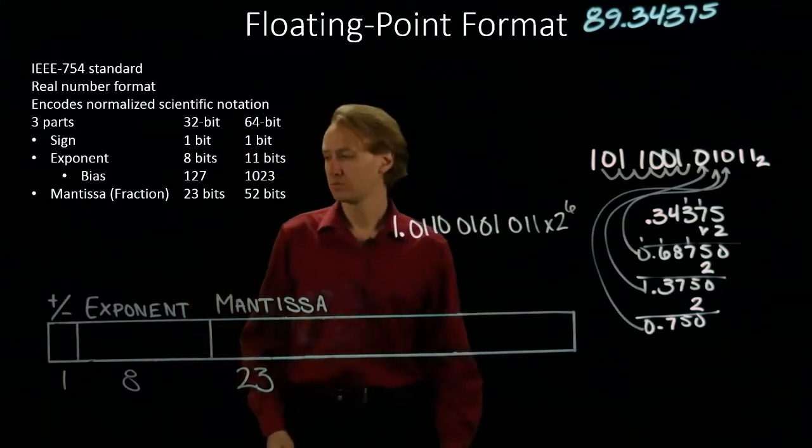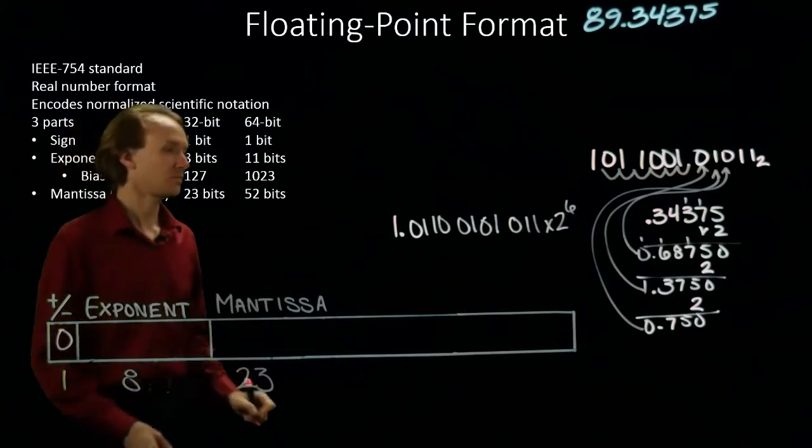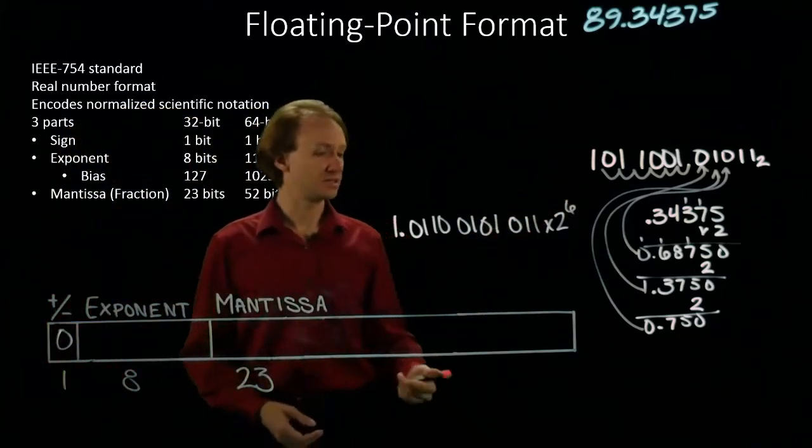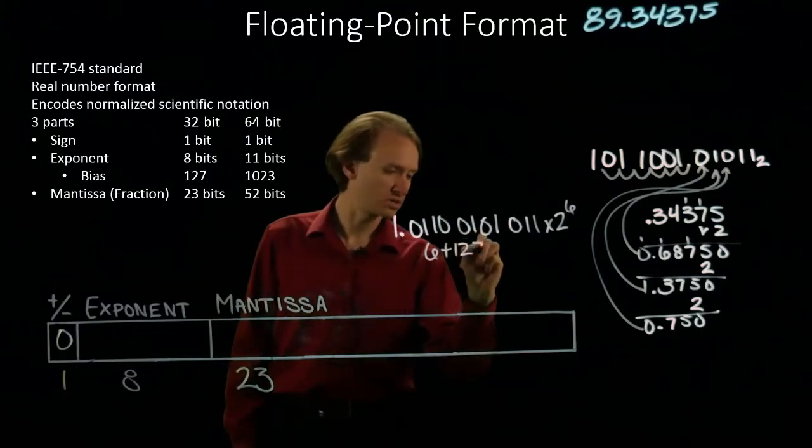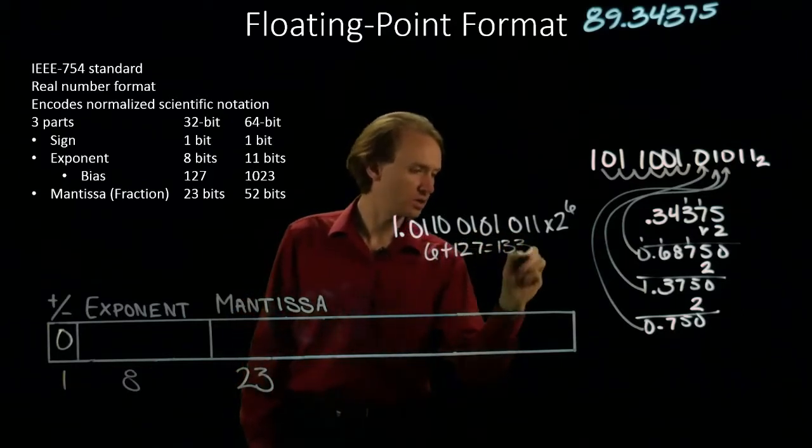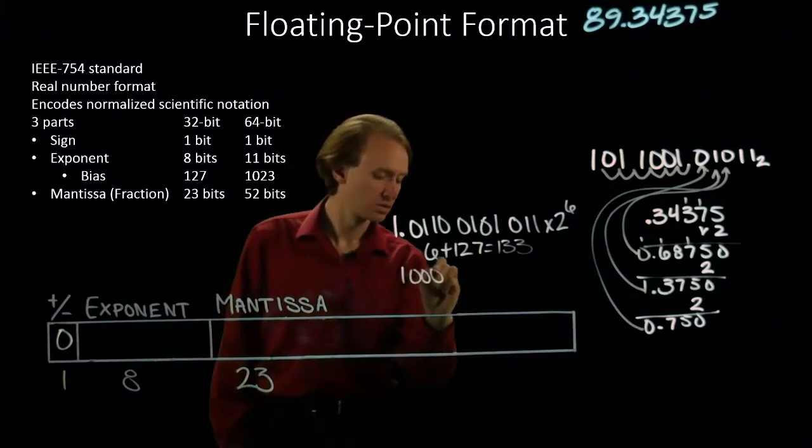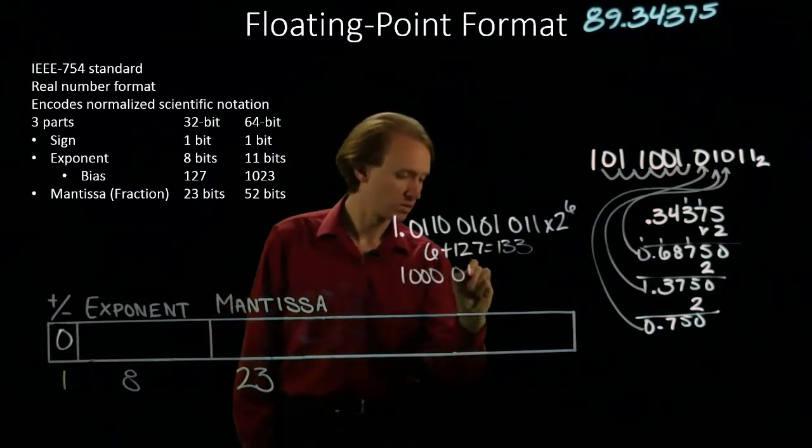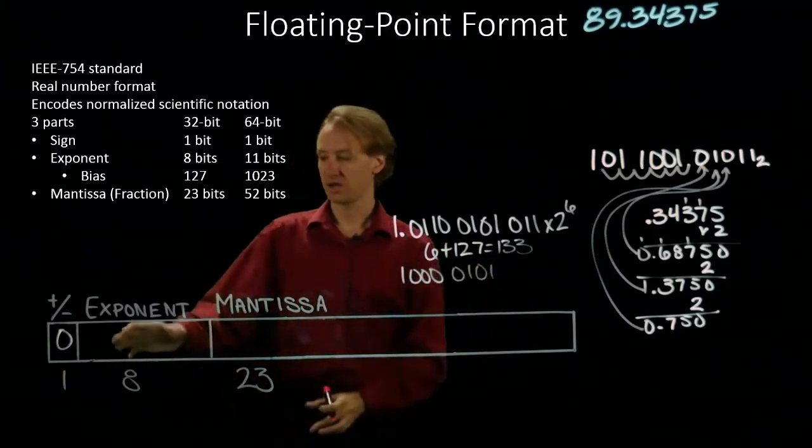And this is a positive number. So, my sign bit will be a 0. My exponent is a 6. So, 6 plus 127 is 133, which is the 128 bit plus 5. So, I will copy that in for my exponent.